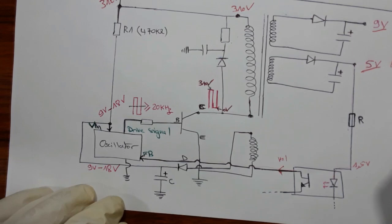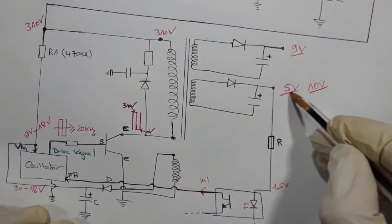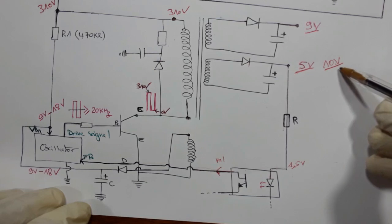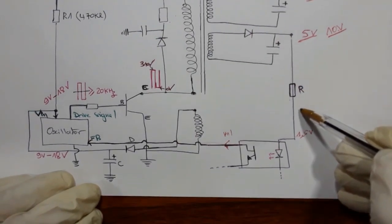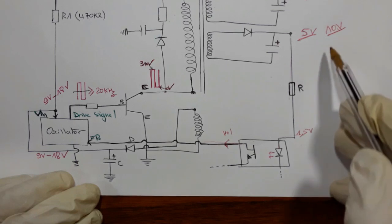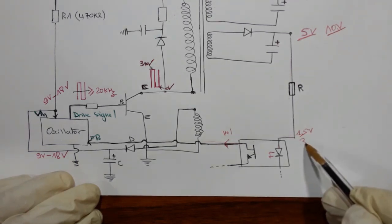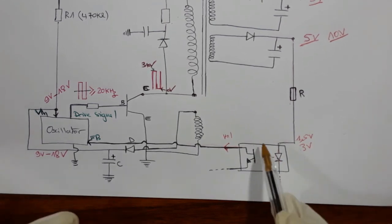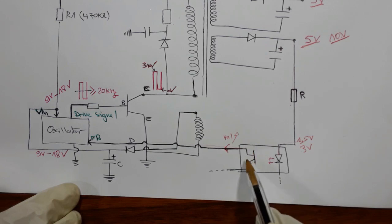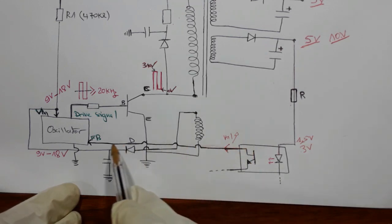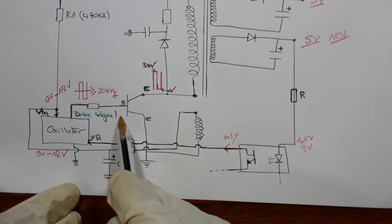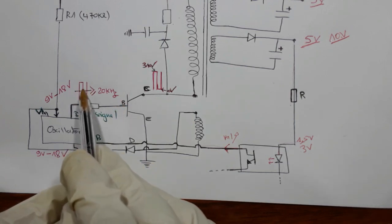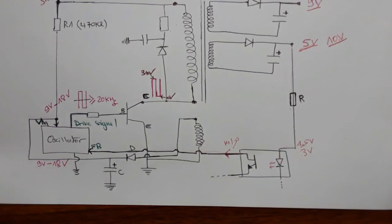For example, if we get 10 volts instead of the expected 5 volts, the 10 volts passing through the resistor will give about 3 volts instead of 1.5 volts — making the light in the diode stronger. The resulting stronger feedback signal causes the oscillator to adjust its output back down to 5 volts. This is the feedback and regulation working principle of the flyback circuit.